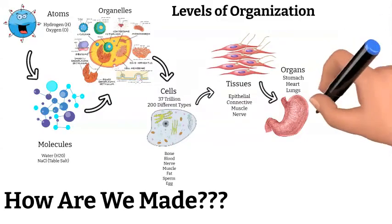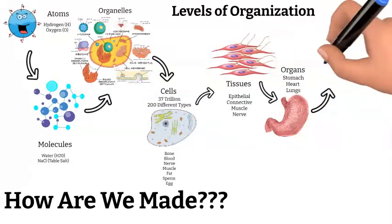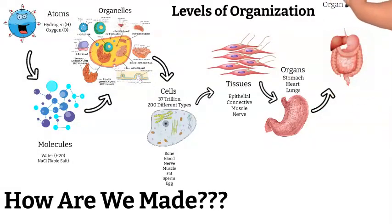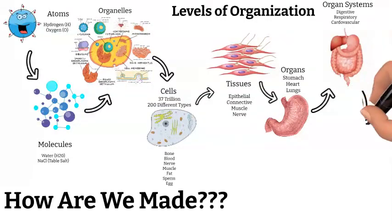Organs that work closely together are considered an organ system. Using the digestive system as an example, it wouldn't do us much good for the stomach to work so hard to break down the food we eat, unless we had ways to use the nutrients to feed our cells and get rid of the waste. So organ systems are formed to work together to achieve a common goal.